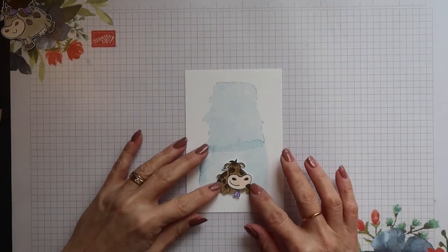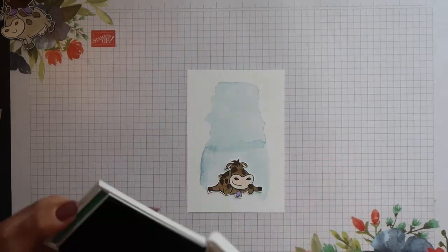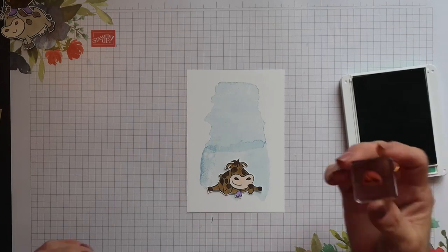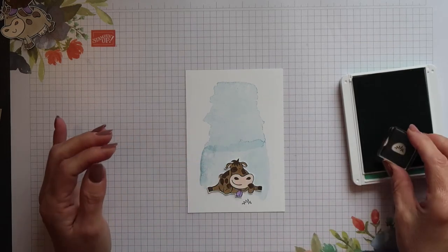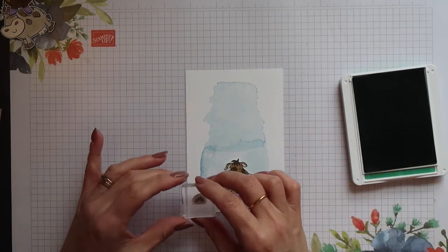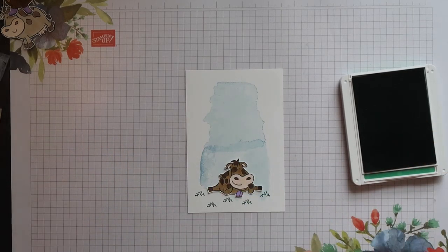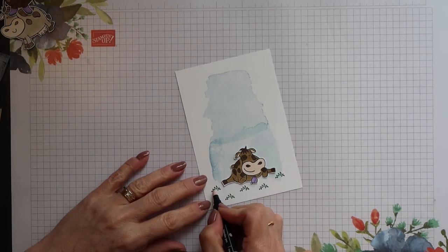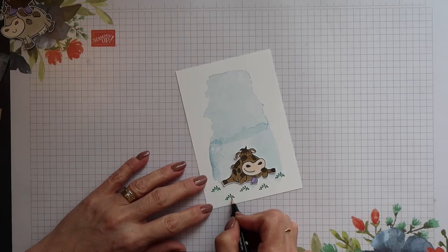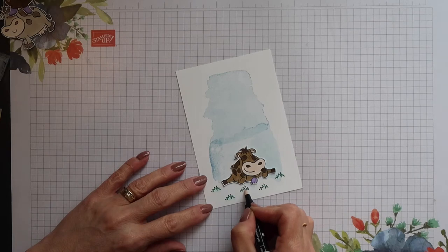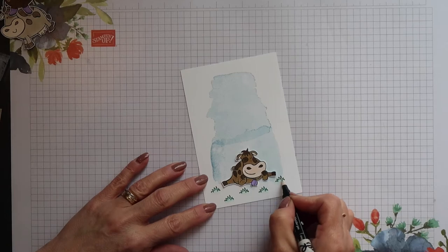I'm going to place my bottom cow into position just so I can gauge where I want to stamp the grass, and I'm going to use Granny Apple Green for this. Then taking one of our blender pens I'm going to pick up the ink from the stamped grass and just drag it downward slightly just to fill in that area. These pens just contain a clear fluid that helps you color with.